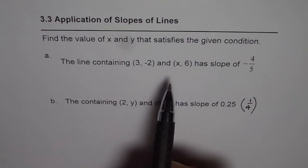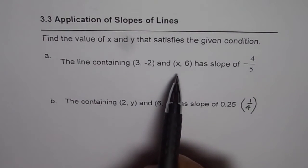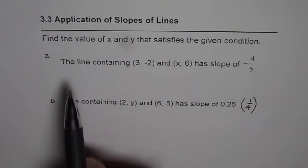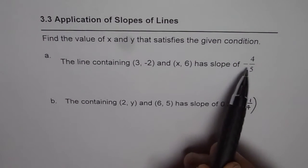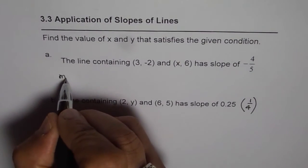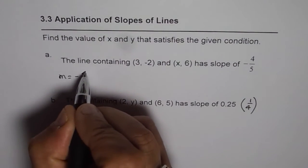So let us find the coordinate points, the missing terms x and y in these equations. The first one: we are given the slope as equal to -4/5.